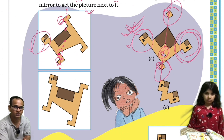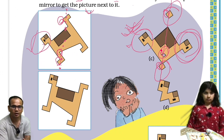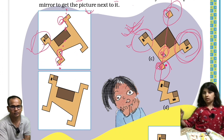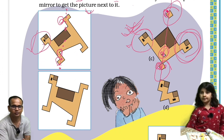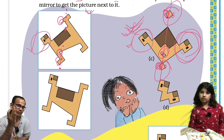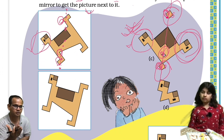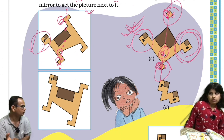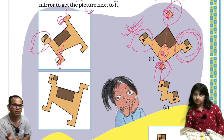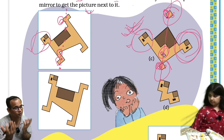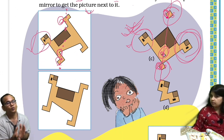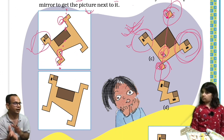Similarly for this one, and similarly for this, and similarly for this section. So that you have to imagine. Otherwise you can do one thing — you can put a mirror on that line and then see how it will look like. And then you can also think, okay, if I put a mirror here, how will it look like.